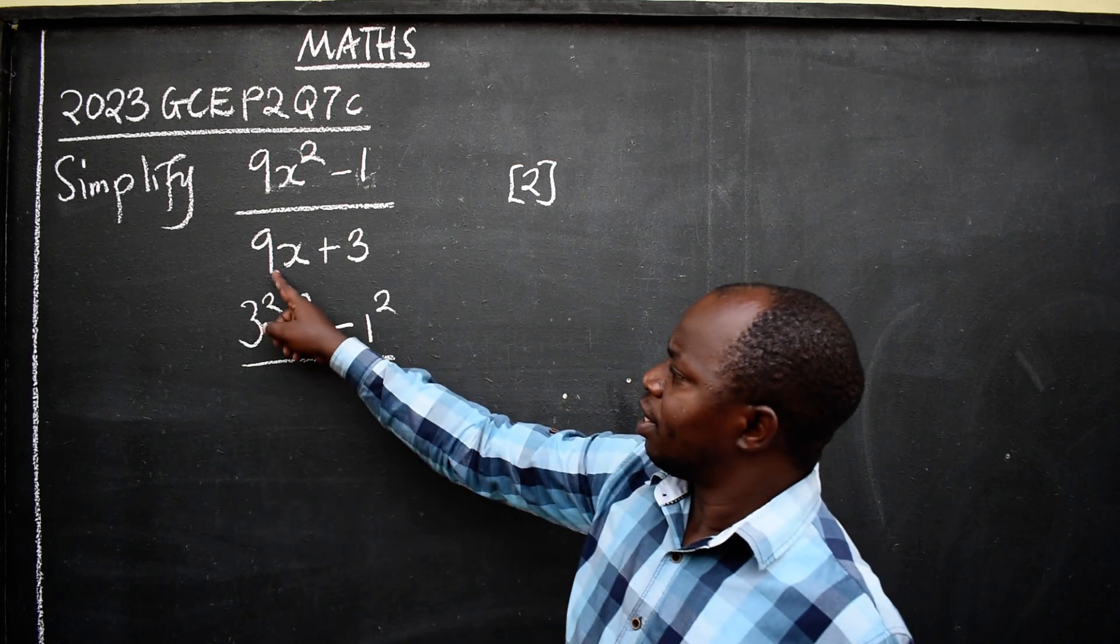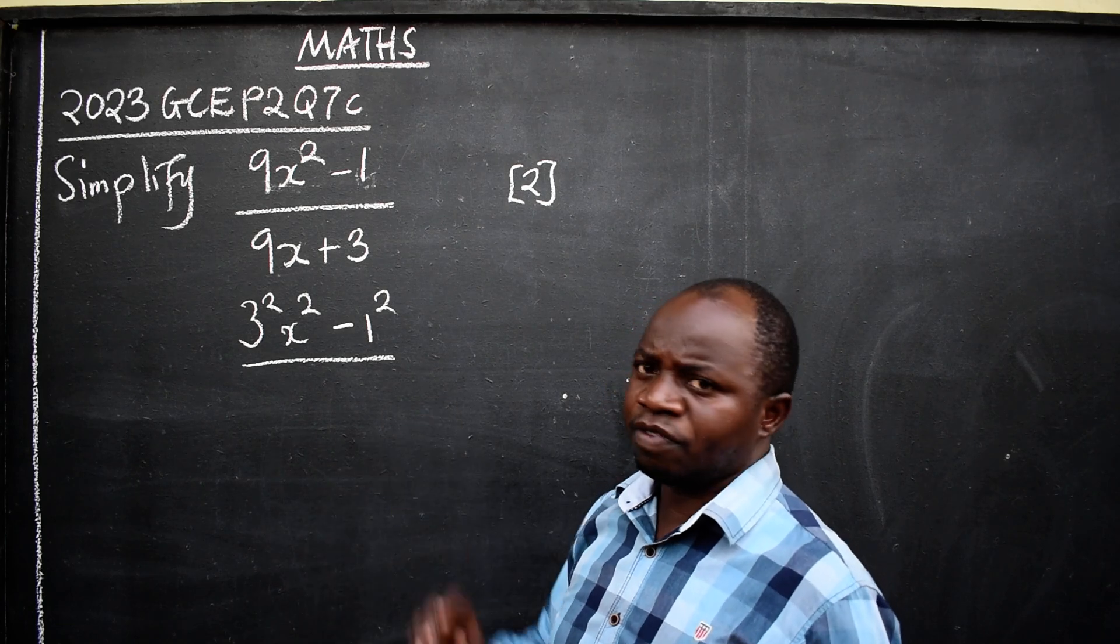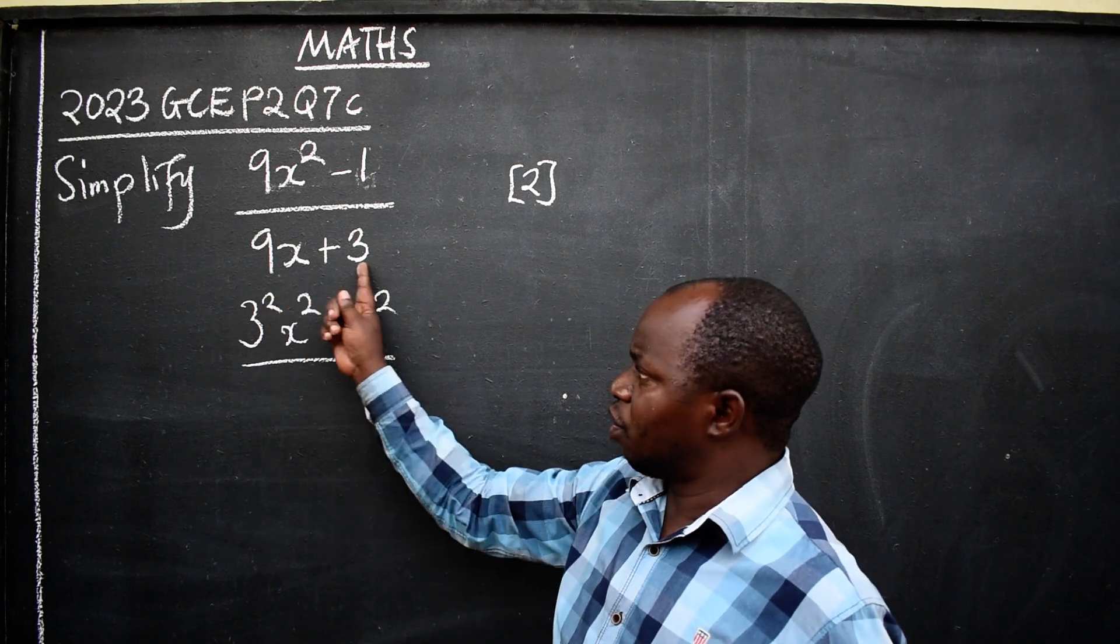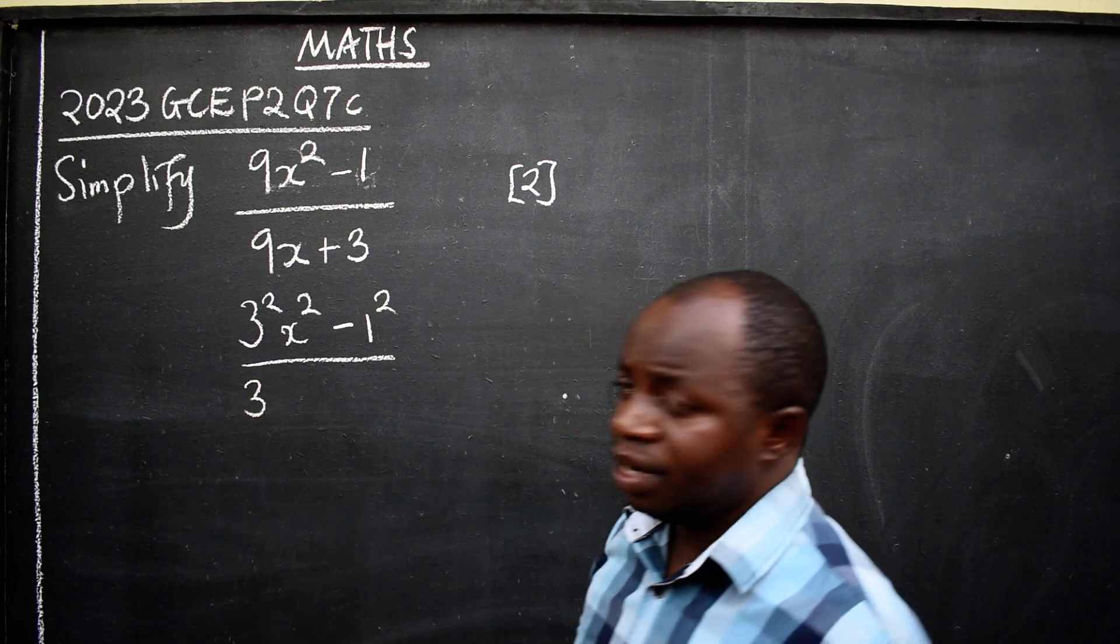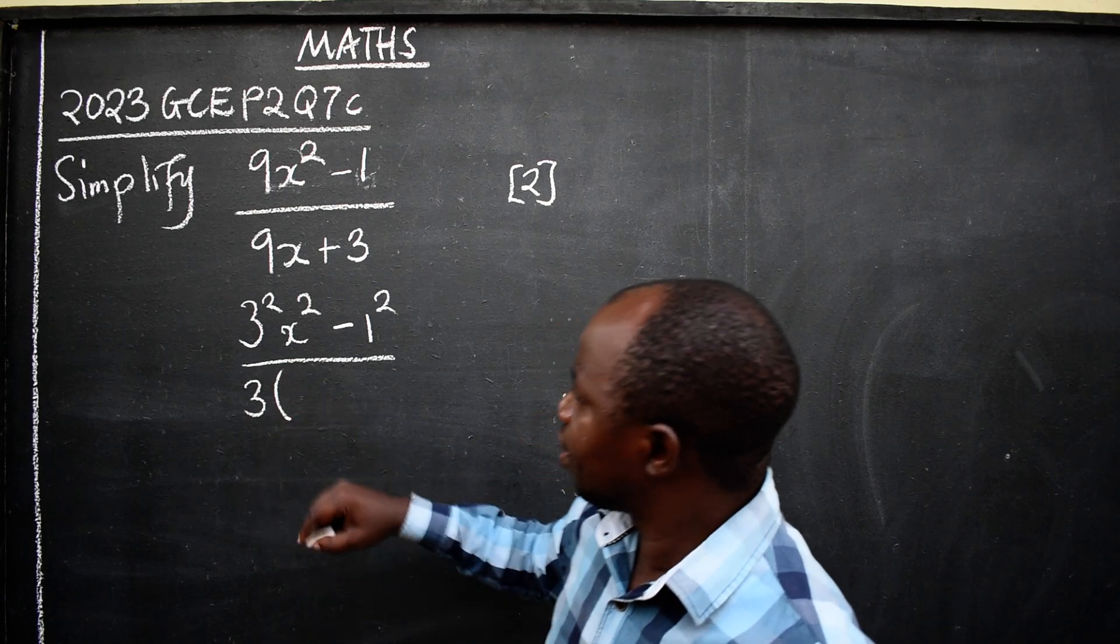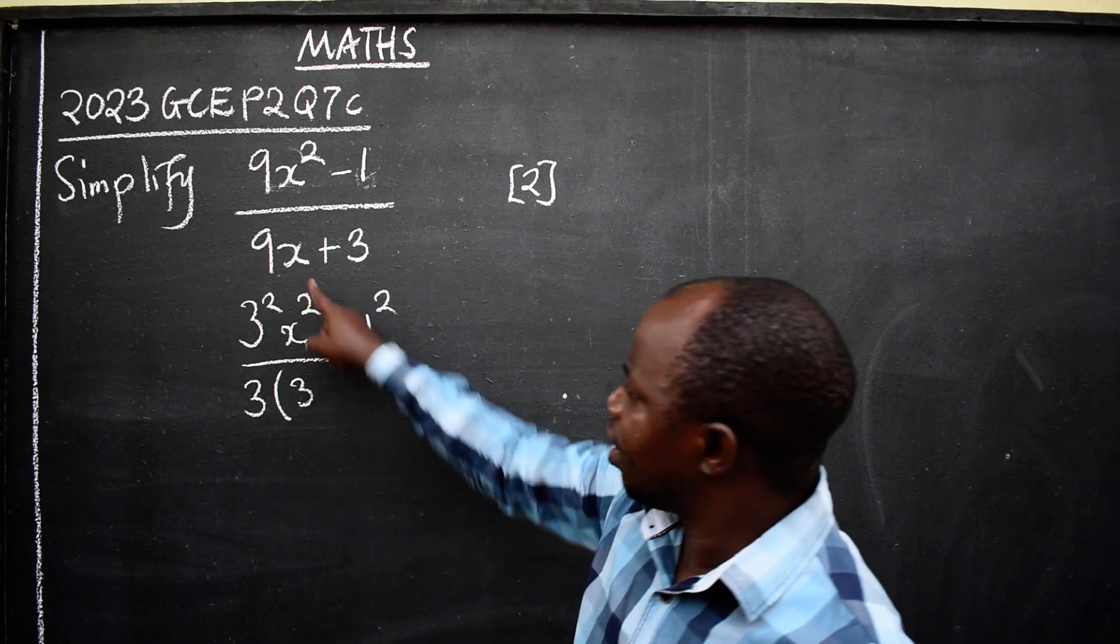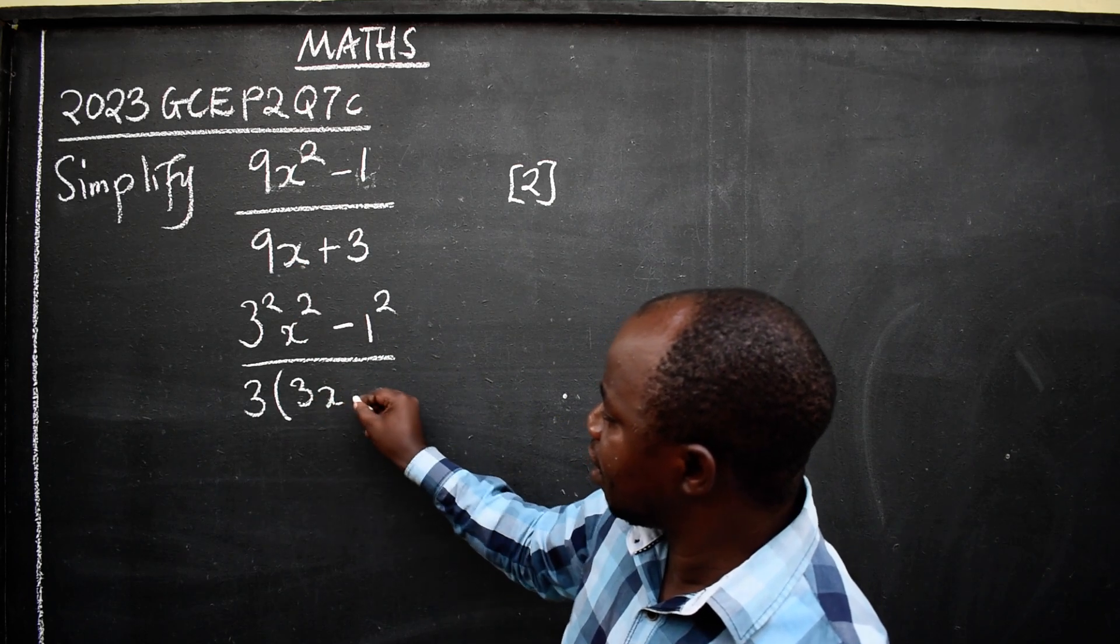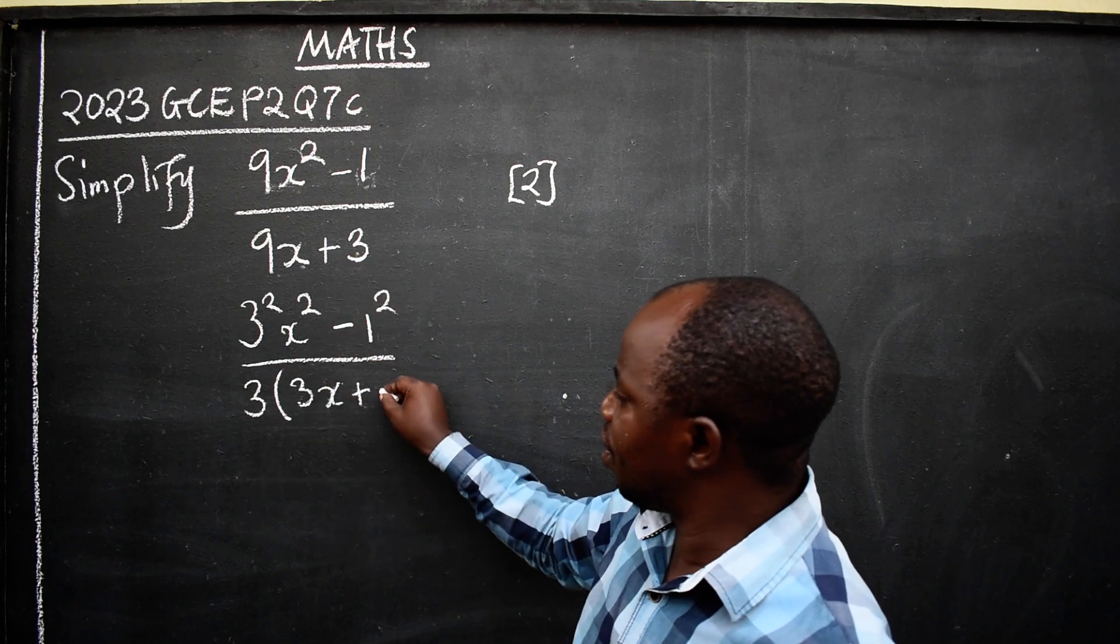Over. What about the denominator? Common factorization. What is common? 3. I'll say 3 is common. How many 3s are in 9? 3 of them. There will be 3x here plus 3 into 3, 1.